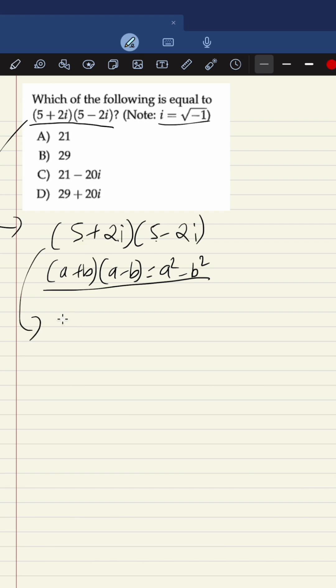It will be 25 minus 2 times 2 is 4, and then i squared. So 25 - 4i². But we don't have that option here, so now we need to use the given information.